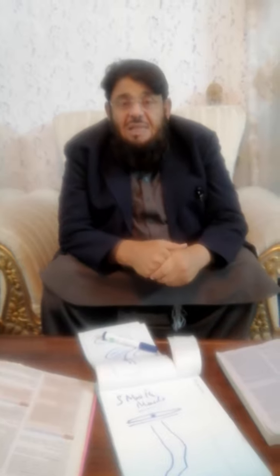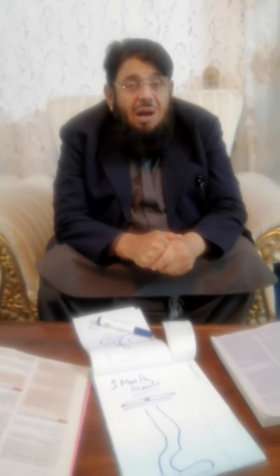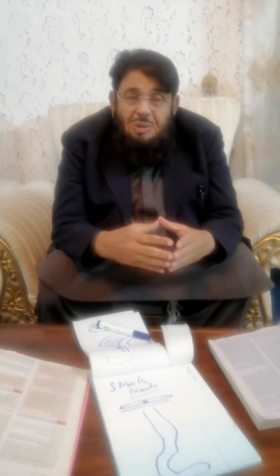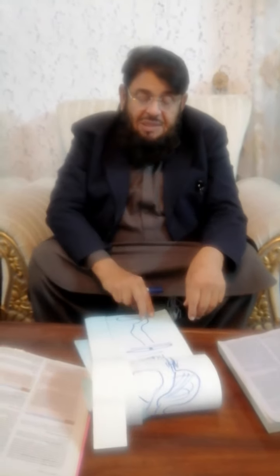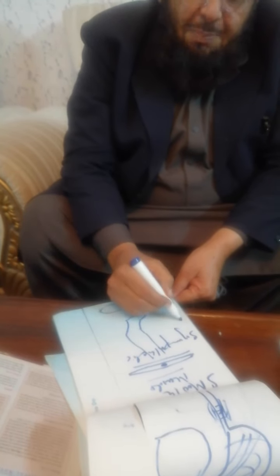The smooth muscles are supplied not by somatic nerves but by autonomic nerves. The autonomic nervous system is also called the involuntary nervous system. So smooth muscles are supplied by the autonomic nervous system, that is, by sympathetic and parasympathetic — the two parts of the autonomic nervous system.